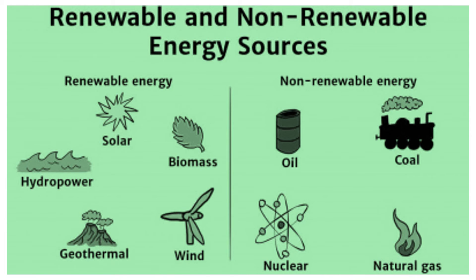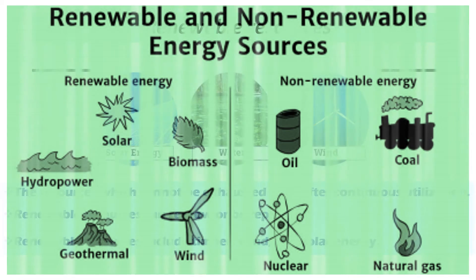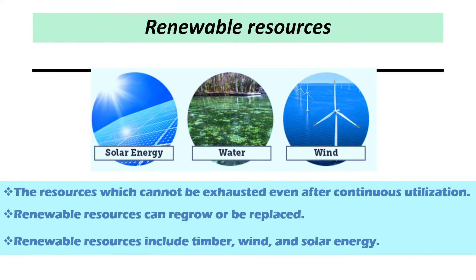There are two types of energy sources: renewable and non-renewable energy sources. Renewable resources are those which cannot be exhausted even after continuous utilization — they can regrow or be replaced. Renewable resources include timber, wind, and solar energy.